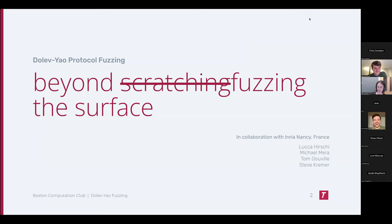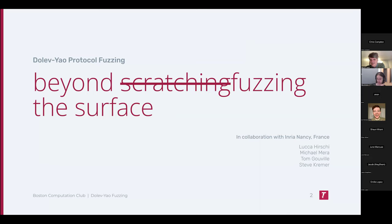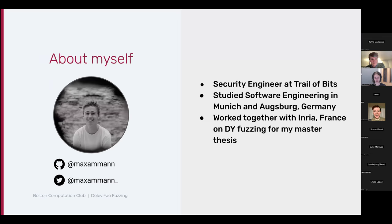Before we start, just to know a little bit more about you — who has done some fuzzing in the past? Jacob has, Ian has, June may have done some. Alright, let's cover that at least to some extent. Can you see full screen? Yeah, nice and clear. So today I want to talk about protocol fuzzing using the Dolev-Yao model, with the goal to go deeper into the protocol and not only scratch the surface as classical approaches do.